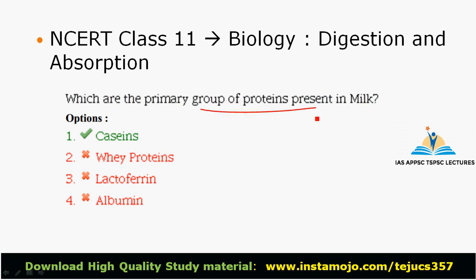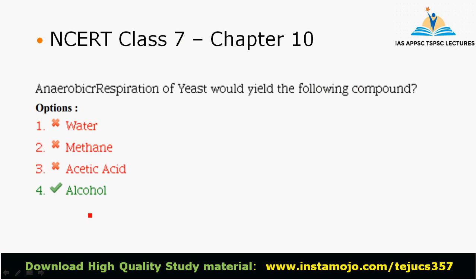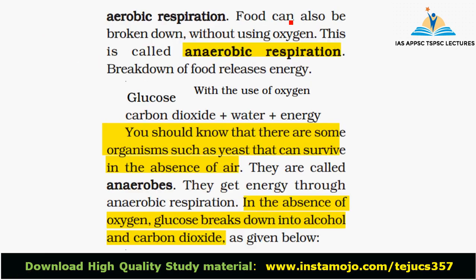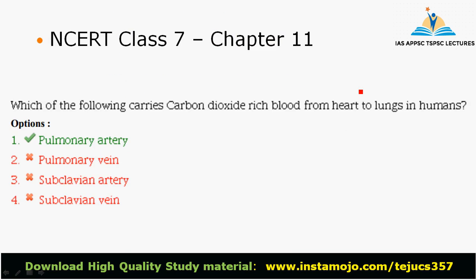What are the primary group of proteins present in milk? This is the NCERT Class 7 biology textbook, digestion and absorption chapter. Next question: anaerobic respiration of yeast would yield the following compound. Which of the following carries carbon dioxide rich blood from the heart to lungs in humans? This is NCERT Class 7 Chapter 11 and Chapter 10. This is a tricky question. You can do note-making, connect keywords.